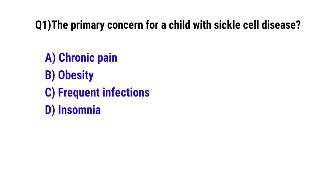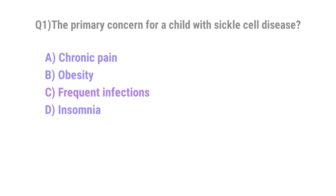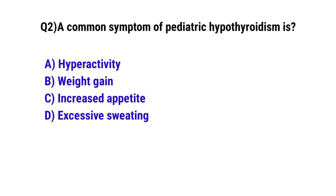Question 1: The primary concern for a child with sickle cell disease. The correct option is C: Frequent infections. Question 2: A common symptom of pediatric hypothyroidism is — the correct option is B: Weight gain.